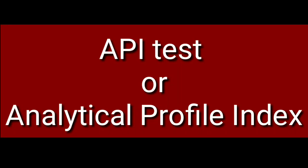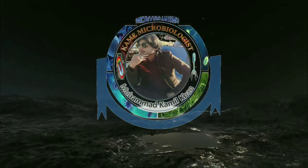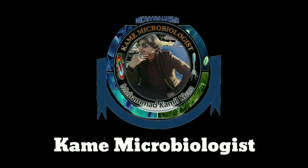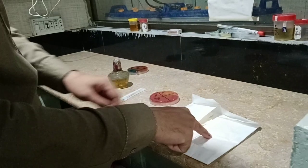Bismillahirrahmanirrahim. Today in this video we are going to see the API test, or Analytical Profile Index. The API test is a microbiology test in which we mostly identify bacteria, especially gram-negative rod bacteria like Klebsiella, Pseudomonas, E. coli, and Proteus. These types of bacteria are mostly identified using the API test.